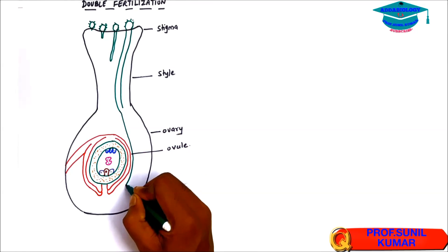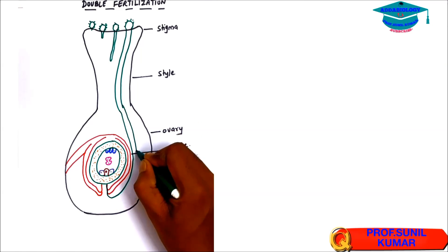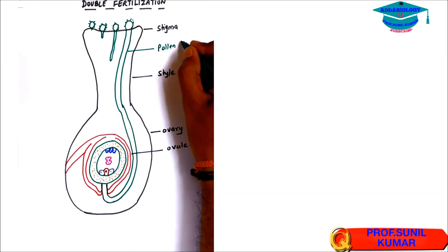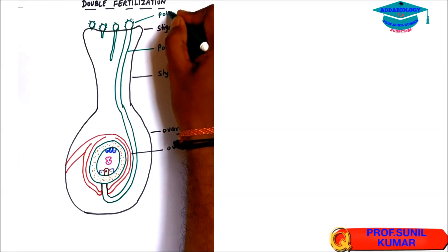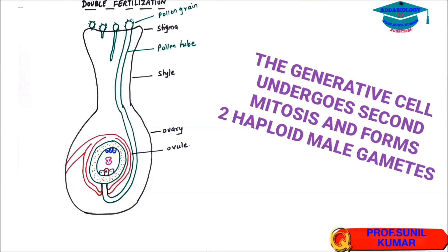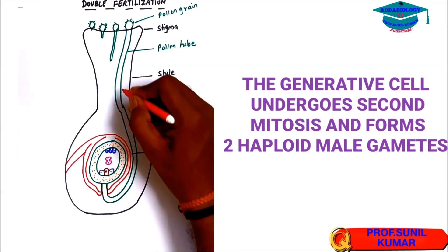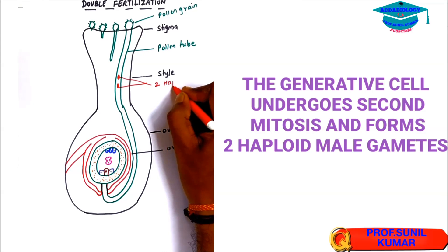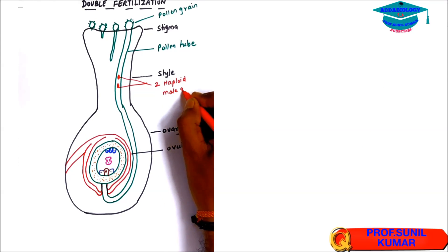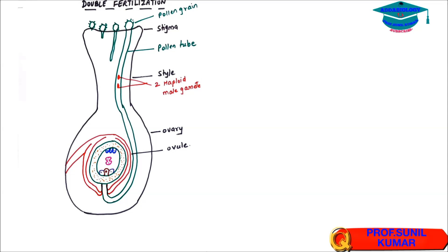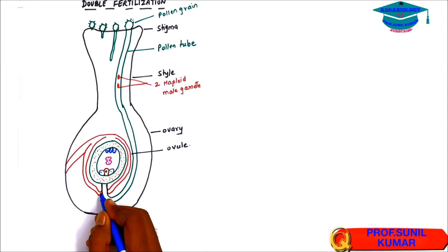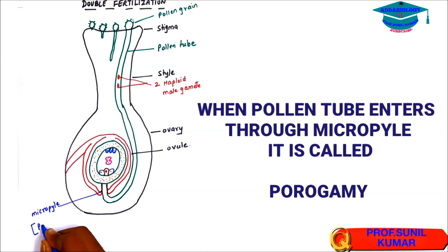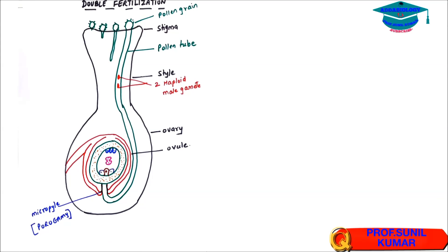The pollen tube mostly enters through the micropyle. The generative cell undergoes mitosis and forms 2 haploid male gametes. The pollen tube enters the ovule through the micropyle — this process is called porogamy. The word 'poro' refers to the micropyle pore and 'gamy' means marriage, so porogamy means fertilization through the micropyle.